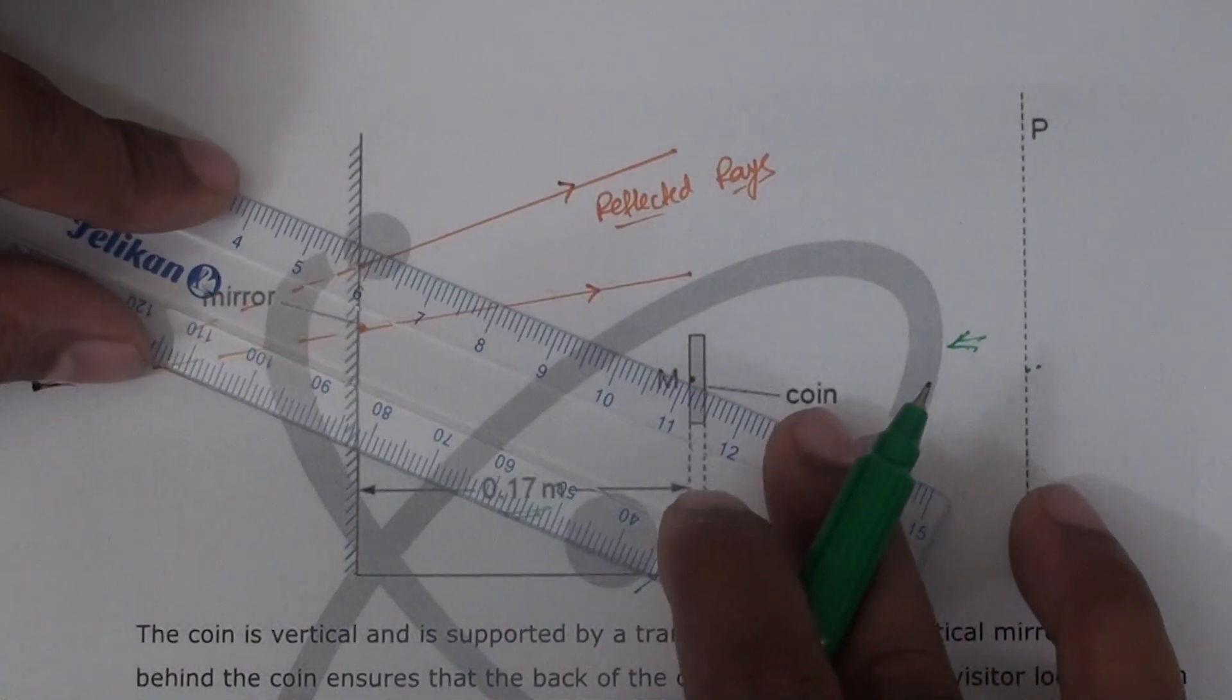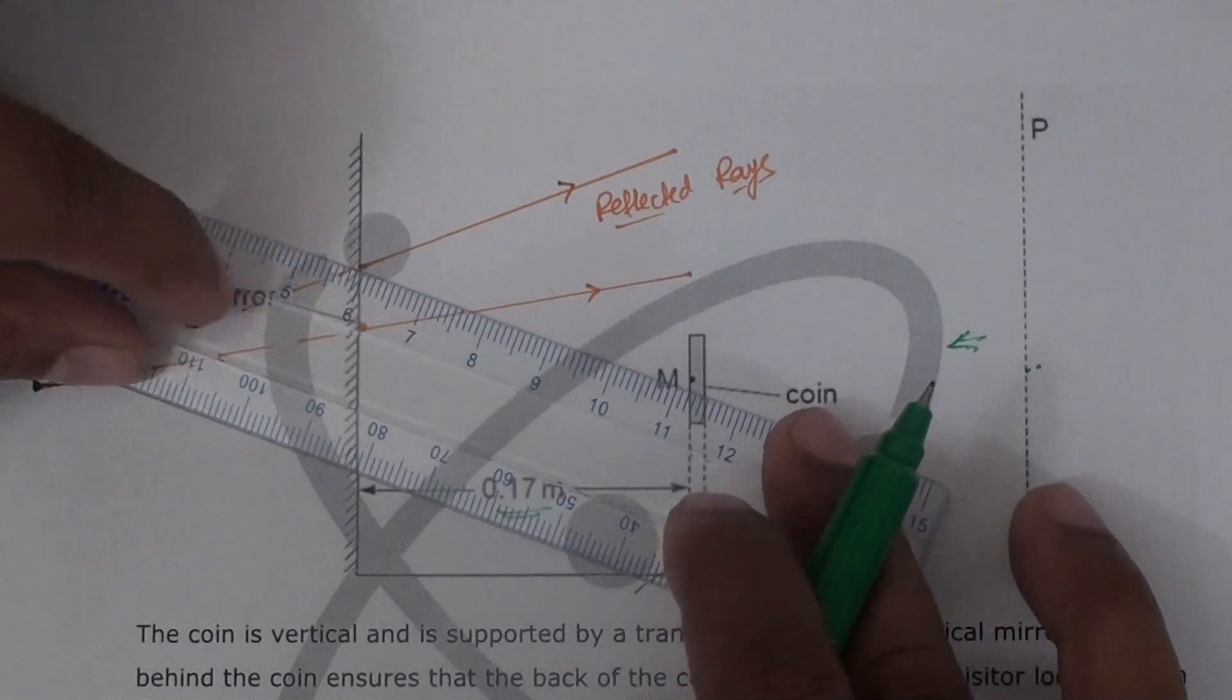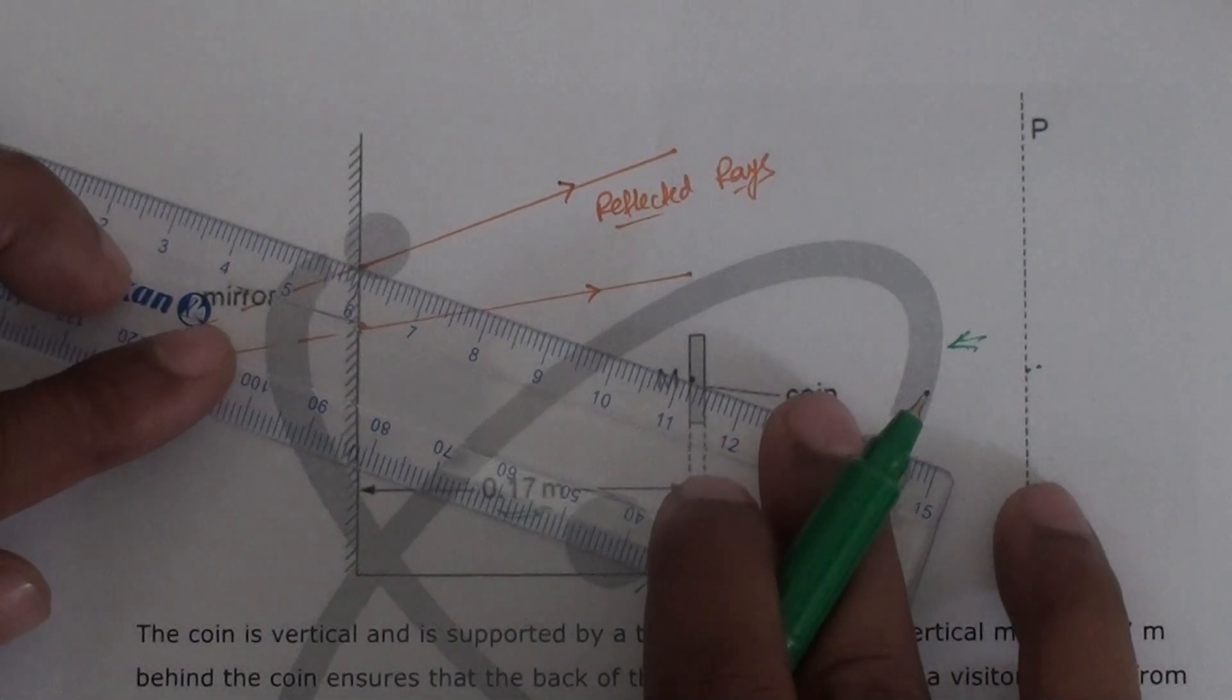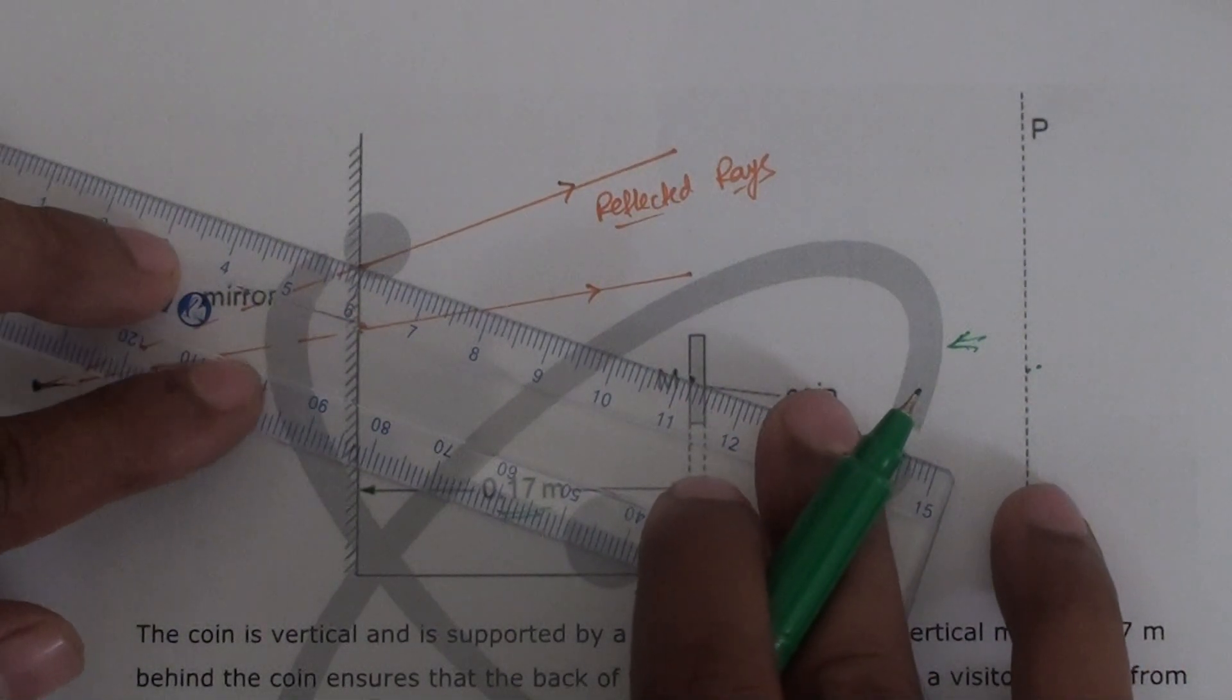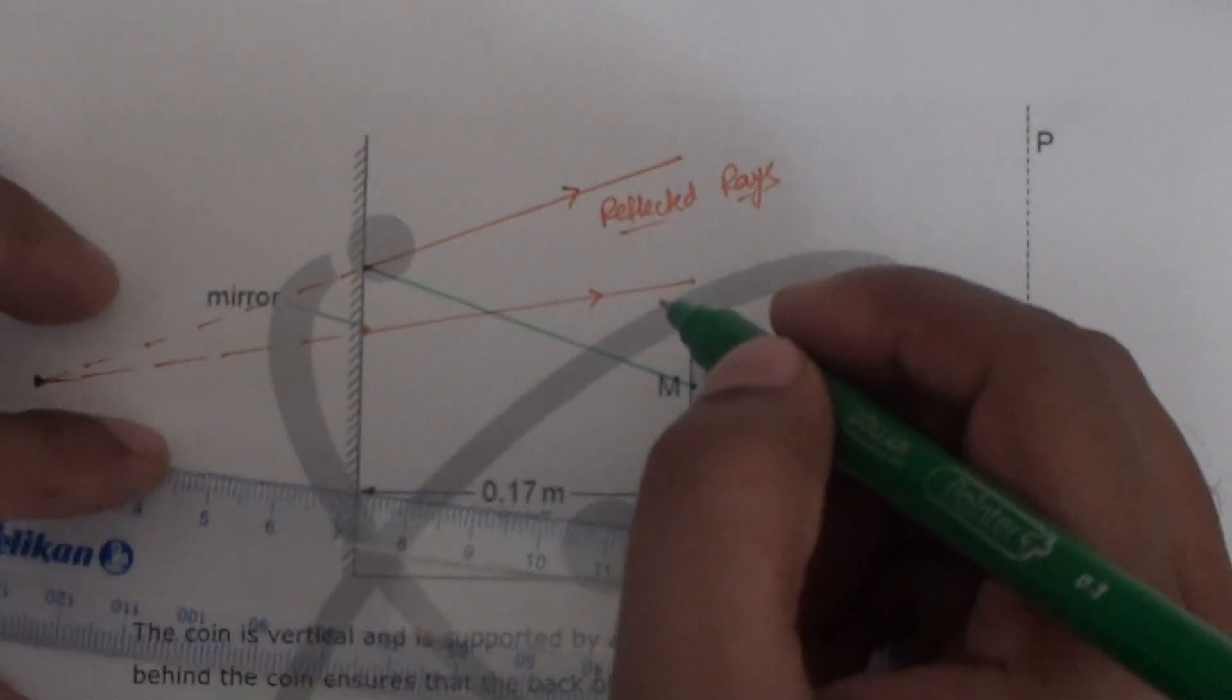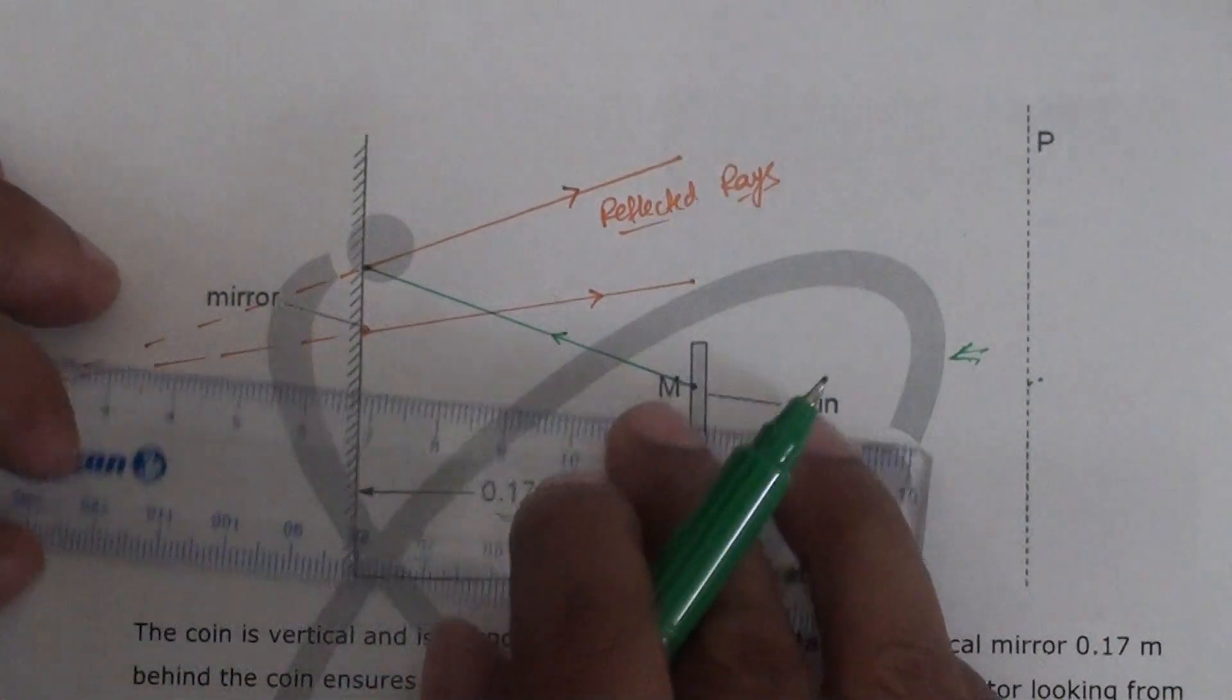There you go, we have got two lines. Now these are reflected rays. Remember, with the orange color in this question I'm drawing the reflected rays. Now let's draw the incident rays. Incident rays would be coming from M, and they have to meet at point M.